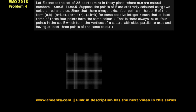This is the fourth problem of RMO 2018 and it's a very interesting little problem. We pick 25 points on the plane, and we will draw squares whose sides are parallel to the axis.